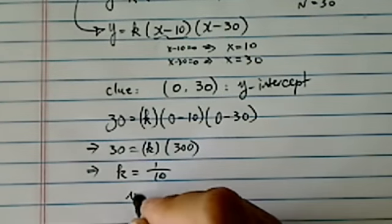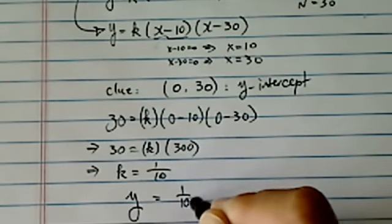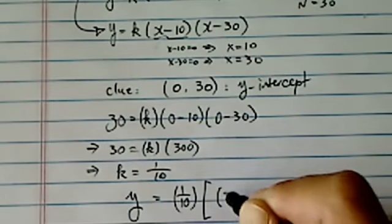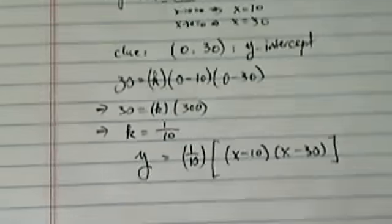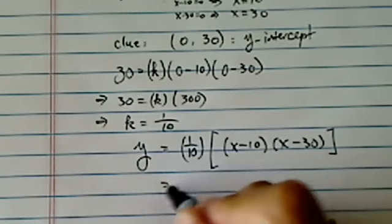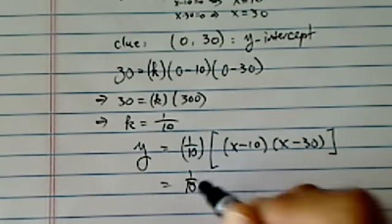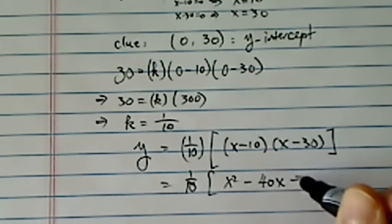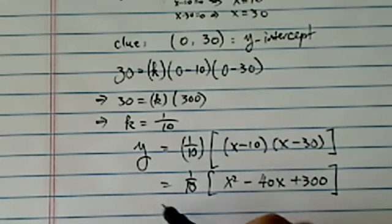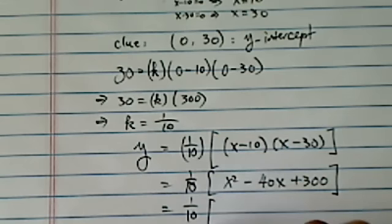Now I have the complete equation. y is equal to 1 tenth, x minus 10, times x minus 30. Since we are looking for the vertex, we do have to multiply it out. So I have x squared minus 40x plus 300. 1 over 10, I'm going to leave it alone.